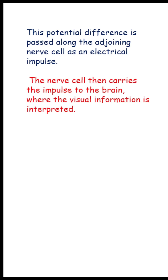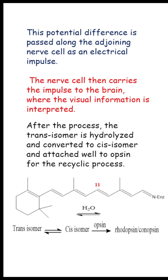The nerve cell carries the impulse to the brain, where the visual information is interpreted. This is how the vision process takes place in our eyes. After the process, the trans isomer is hydrolyzed back and converted to the cis isomer, which is re-attached to opsin for the recycling process — completing the photochemistry of vision.